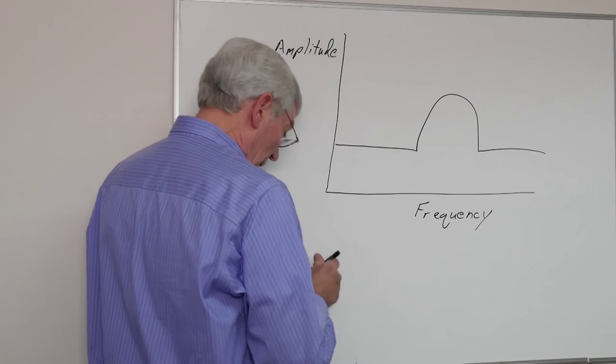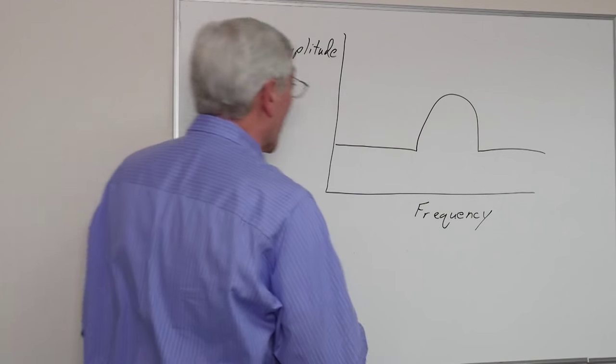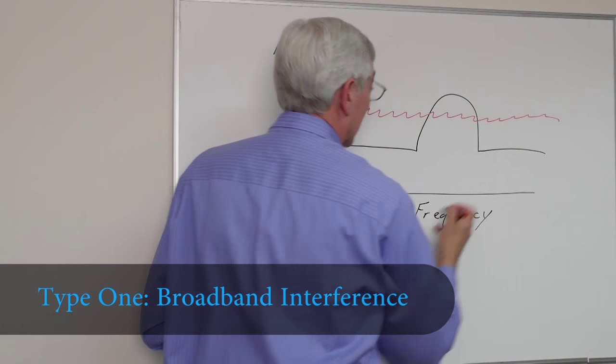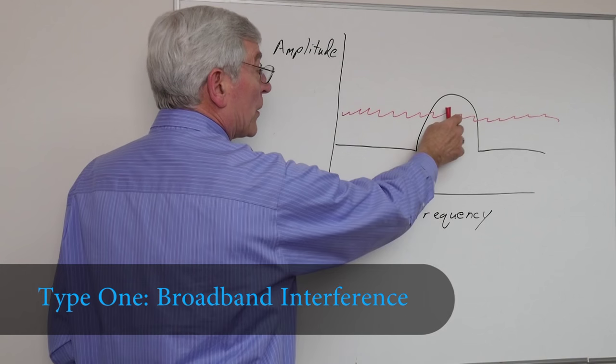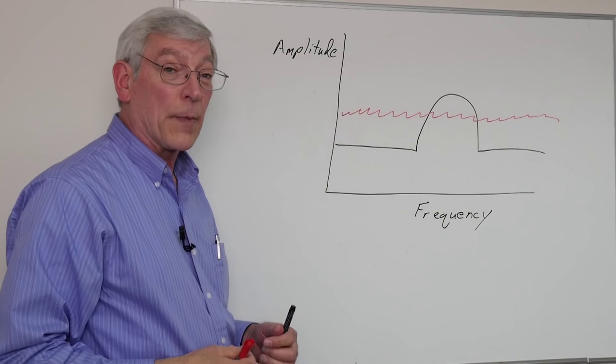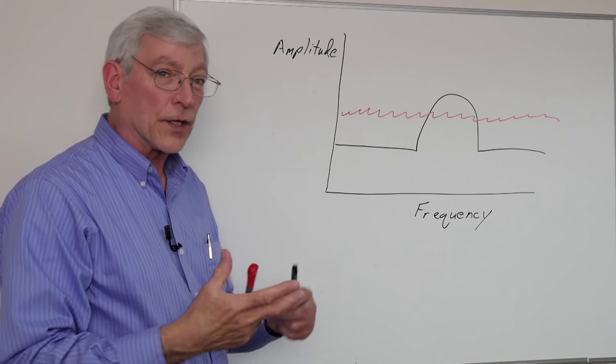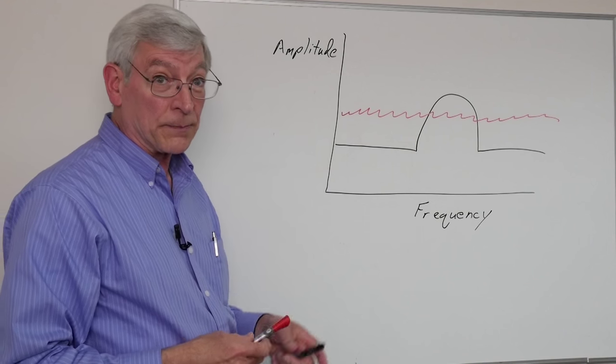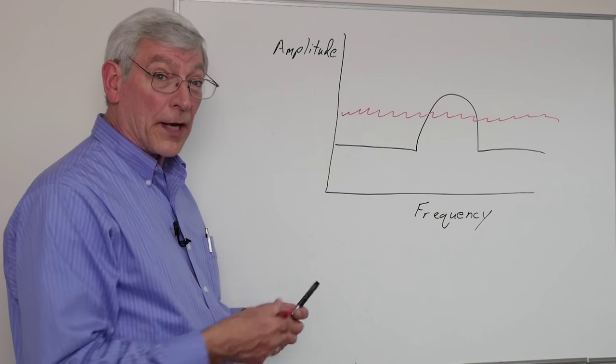So if we have interference from a microwave, for example, that will be broadband interference and might go all the way across the band like this. And where that interference intersects with the channel 6 data, we might have trouble distinguishing our 1s and our 0s, and we might lose our valuable information in channel 6. So that's broadband interference.